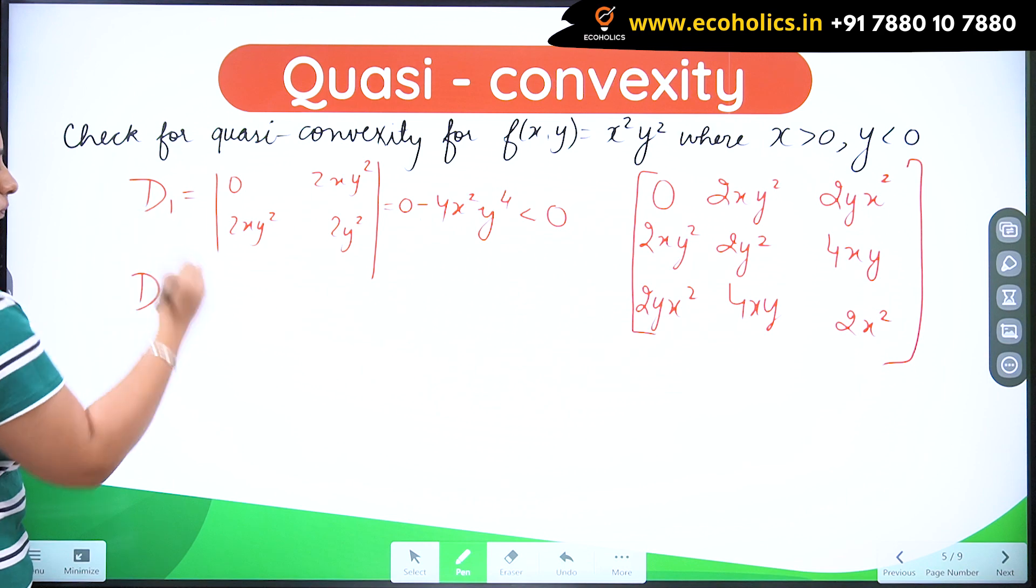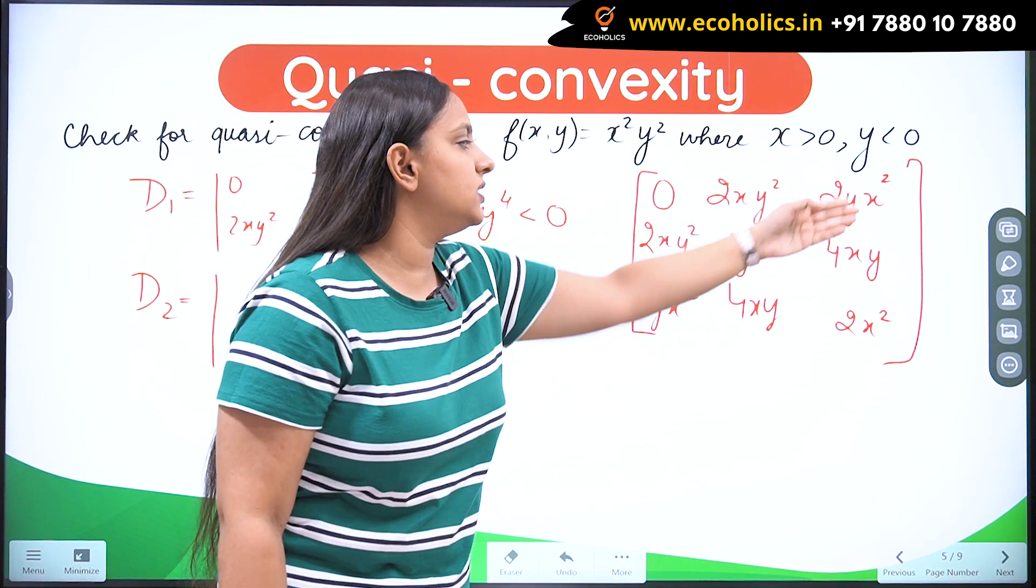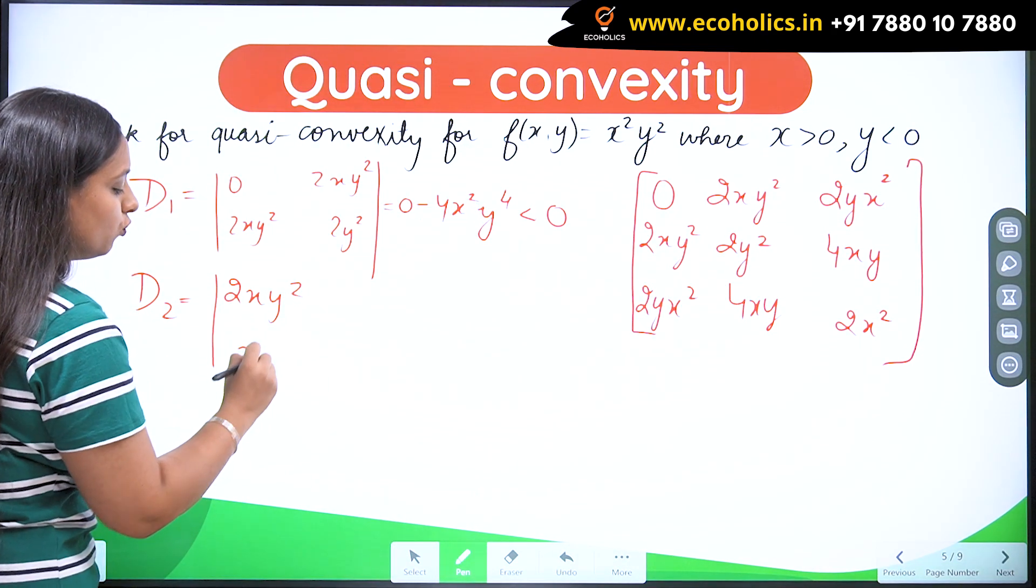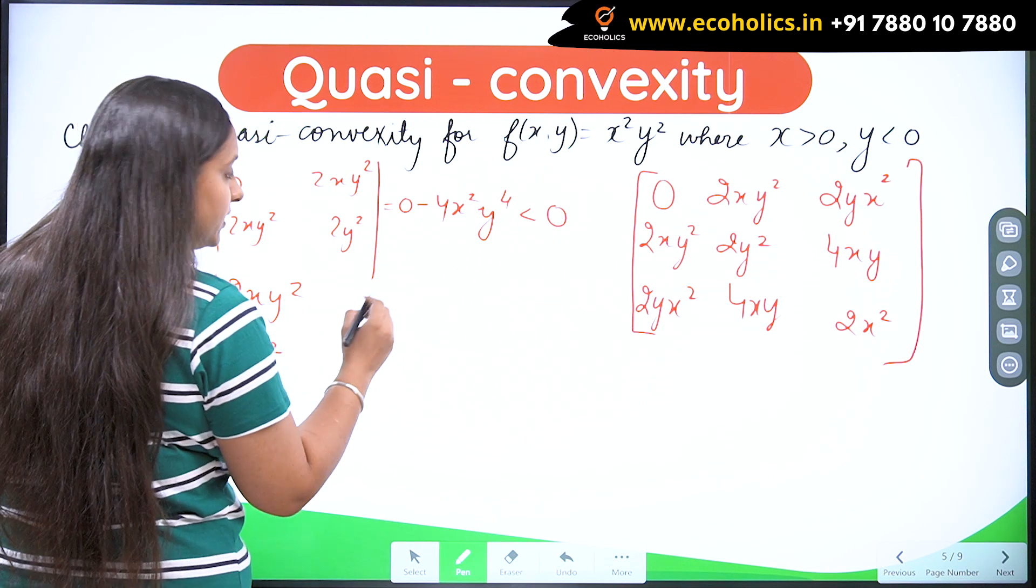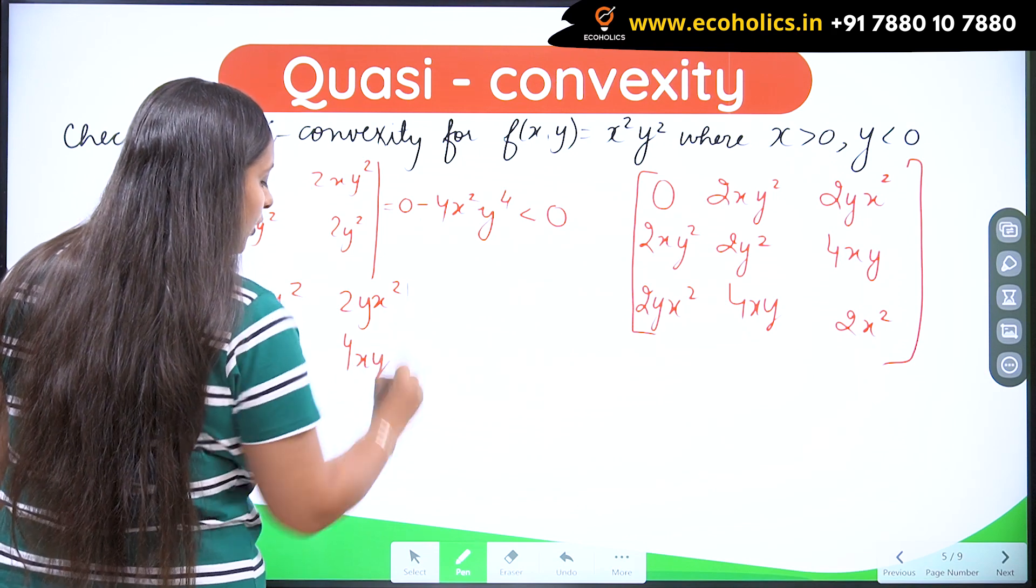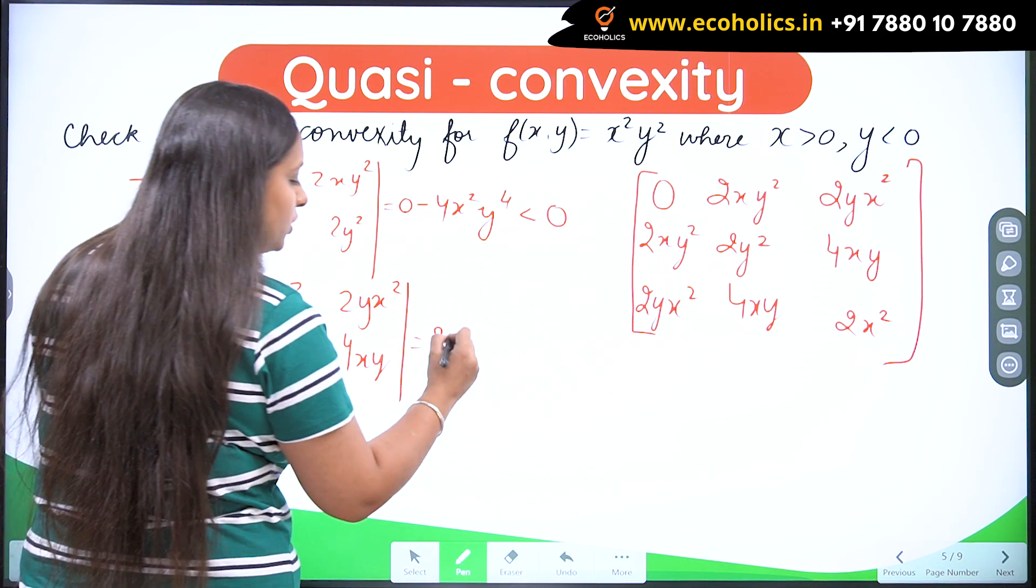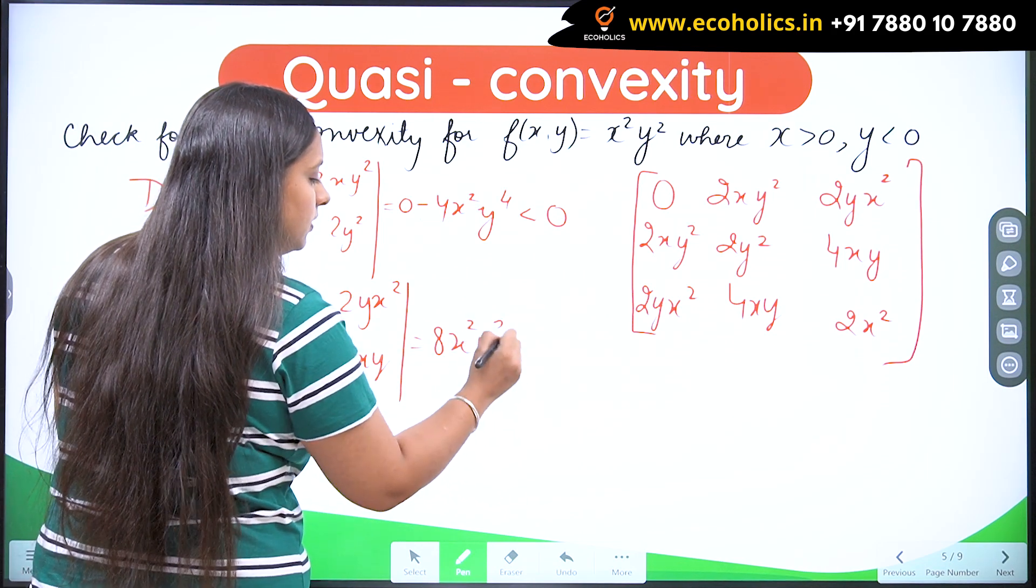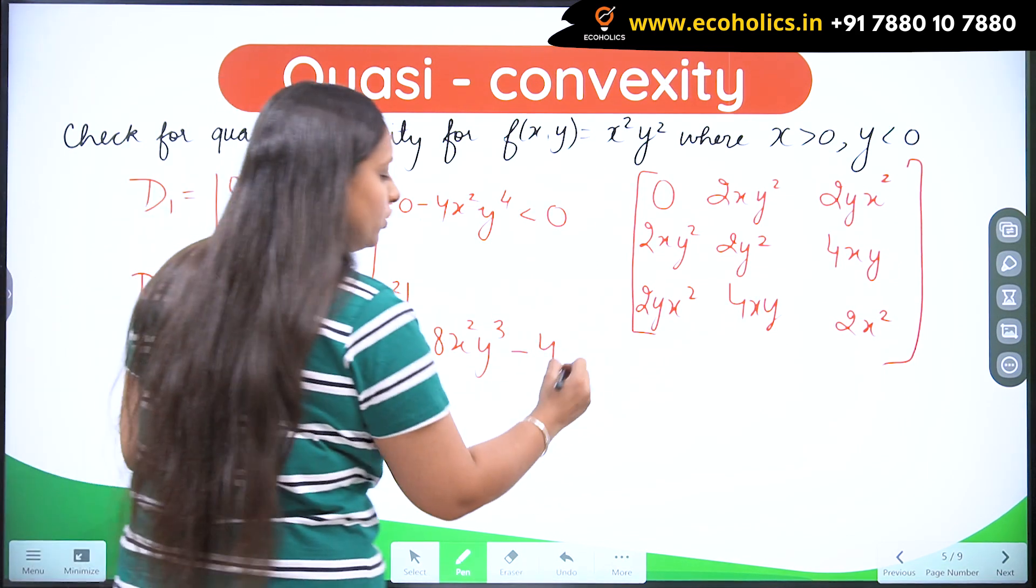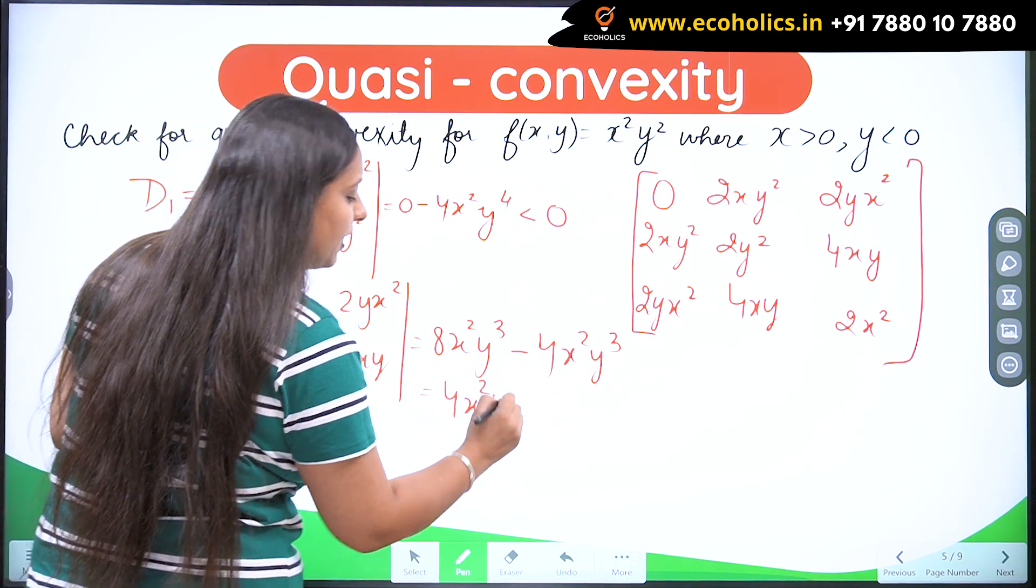After that, let's come to d2. So in d2, I am going to take these two rows and these two columns. So I will be having 2xy square, 2y square. After that, I have 2yx square and 4xy. Now when I solve for it, I will be getting 2 into 4, 8, x square, y cube. So upon solving, I would get 4x square, y cube.